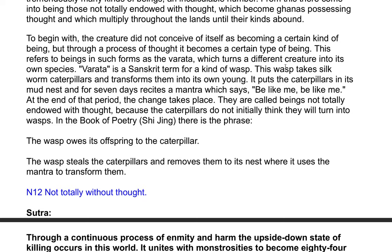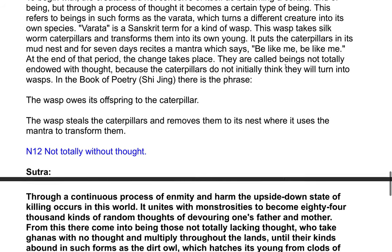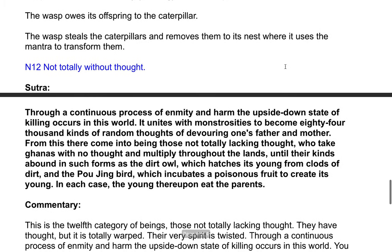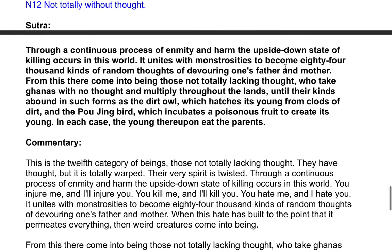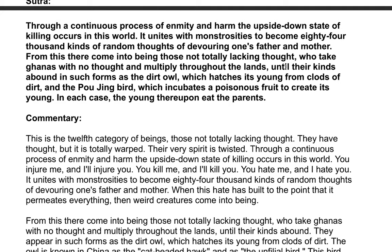Sutra: Through a continuous process of enmity and harm, the upside down state of killing occurs in this world. It unites with monstrosities to become 84,000 kinds of random thoughts of devouring one's father and mother. From this there come into being those not totally lacking thought, who take ganas with no thought and multiply throughout the lands, in such forms as the dirt owl which hatches its young from clods of dirt, and the poaching bird which incubates a poisonous fruit to create its young — in each case the young thereupon eat the parents.